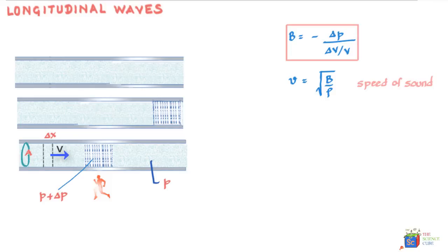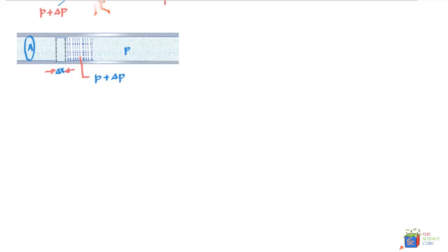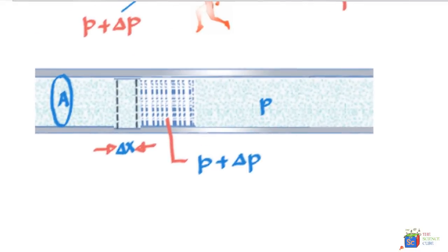Then we can say that this section of thickness delta X and cross sectional area A is moving towards a pulse with a velocity V. Remember, we are moving with the pulse. So the pulse is stationary in our reference frame, but the air ahead is moving towards you and the pulse with a velocity V. So when this section of air reaches a pulse, the front phase of the section comes in contact with the pulse and naturally slows down due to positive or high pressure of the pulse.